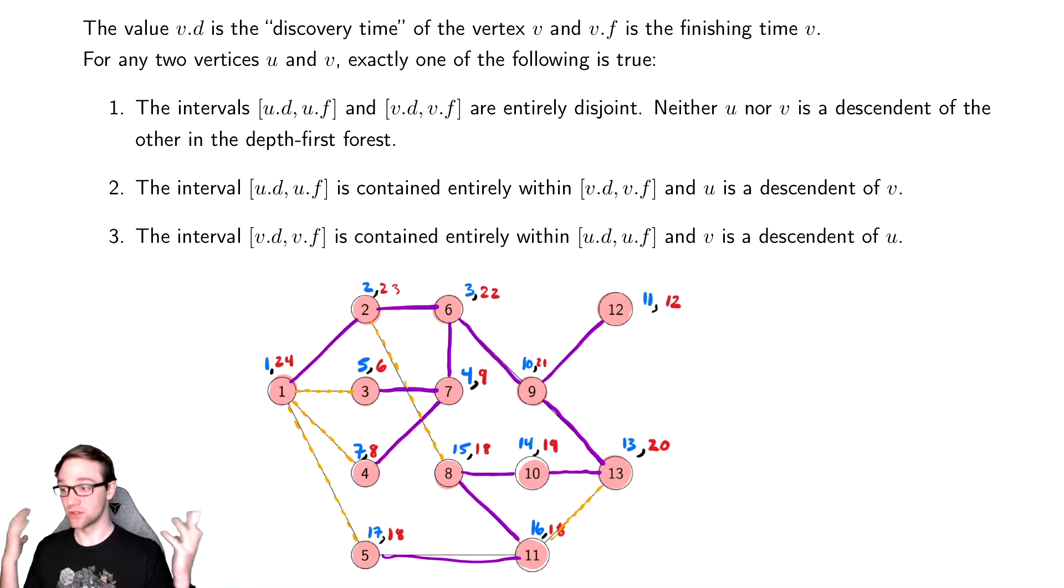That's all that says. It's that if you're stuck within the interval, you're a child. If you have no overlap, you are in different branches of the tree. So this helps you identify sort of properties of this tree, which can be kind of helpful. It will also help us classify the edges.